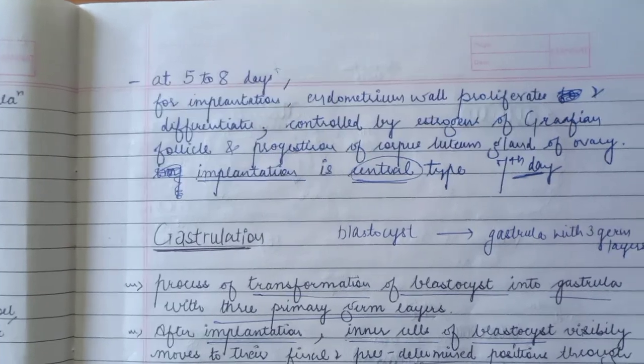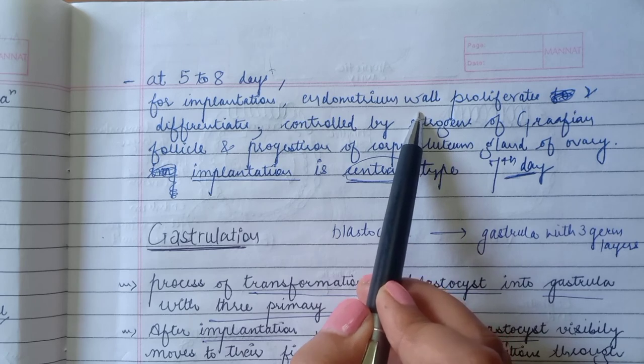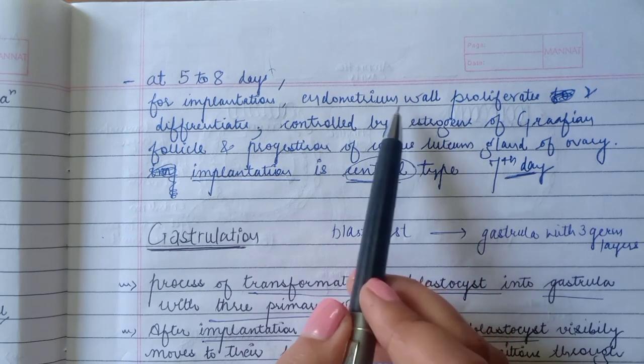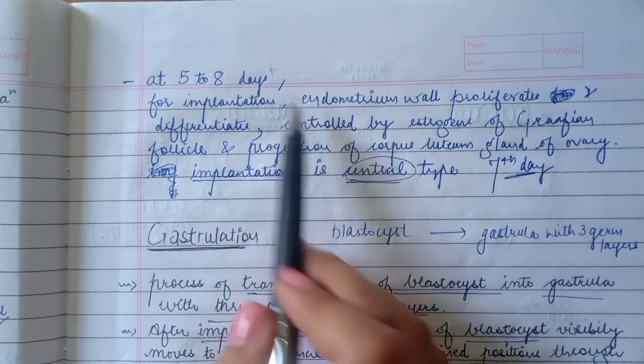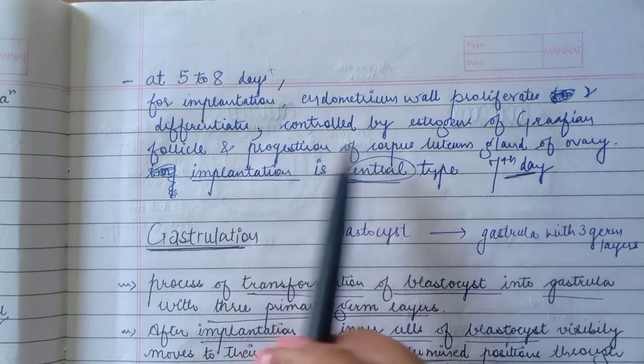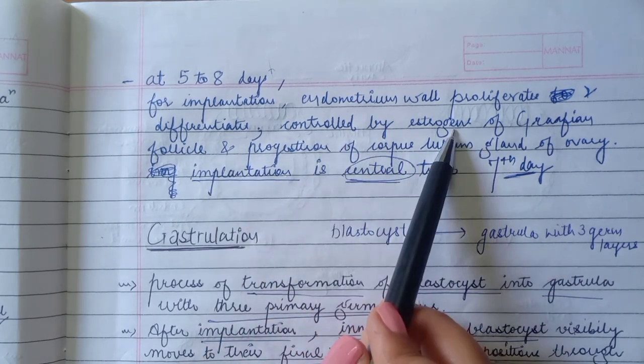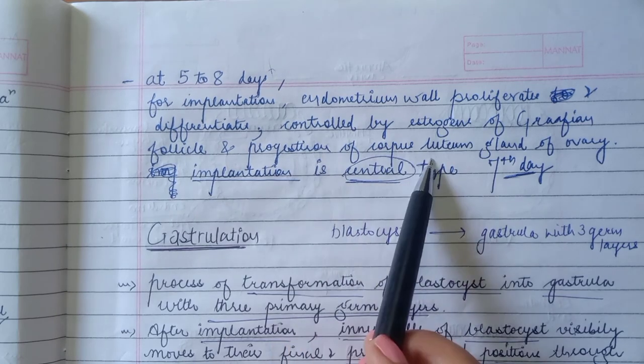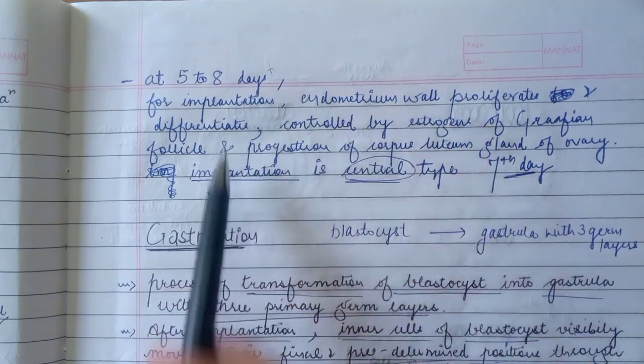The implantation is on the 7th day. Now what happens in the 5th to 8th days? What happens during implantation? The endometrium wall is proliferated as it needs nutrition. That is why the cells divide, differentiate cells, cells grow. It is hormonal control, obviously. Estrogens secreted from graafian follicles from the ovary. The estrogen is released from the ovary. And progesterone, which is from corpus luteum. The ovary secretes from corpus luteum. They control both of them. So we have understood implantation.